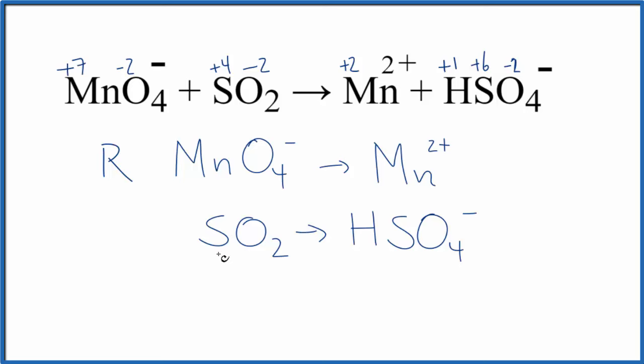The sulfur here went from plus 4 to plus 6. That number got bigger. That's oxidized. And you can see we have two oxygens here and four here, so that makes sense.